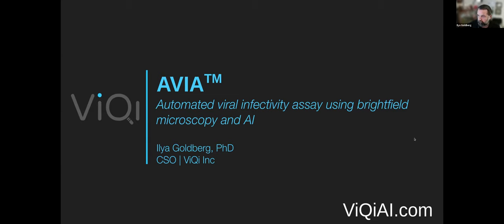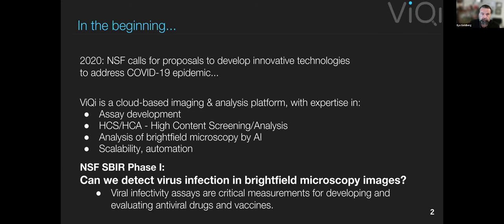This is our work on training AIs to detect infected cells. The NSF made a call in 2020 to develop innovative technologies to address the COVID pandemic. Our company, Viki, is a cloud-based imaging and analysis platform. We have a lot of expertise in developing cell-based assays for microscopy and other kinds of imaging, especially using AIs, and deploying this in the cloud so that we have little impact on local storage, equipment, and software requirements.